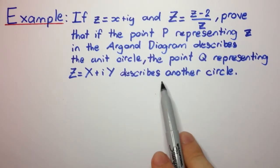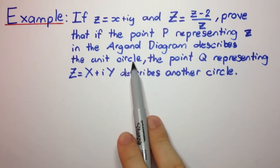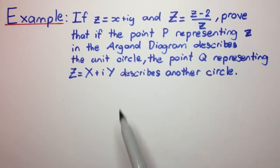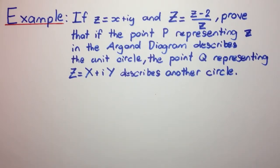Okay, so what we want to show is that this little z, when it describes the unit circle, capital Z is also another circle.